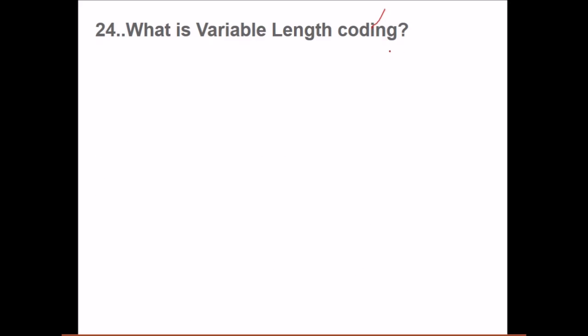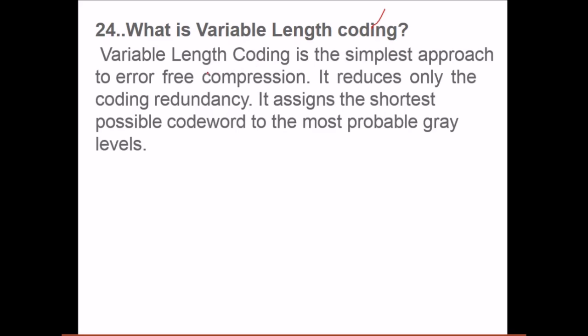What is variable length coding? Variable length coding is the simplest approach of error-free compression. It reduces only the coding redundancy. It means it assigns the shortest possible codeword to the most possible gray levels.